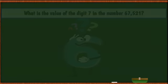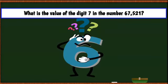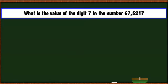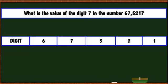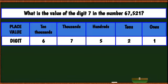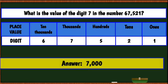Let's try another one. What is the value of the digit seven in the number? We have our digits and our place values. Seven is in the thousands place, so its value is 7,000.